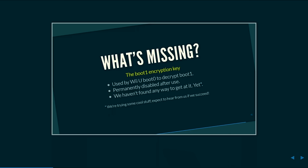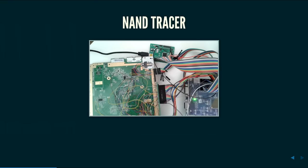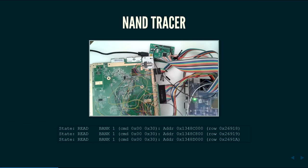Wir versuchten, den Boot-1-Key über einen Side-Channel-Attack zu bekommen, aber das sah nicht gut aus. Wir schlossen also einen NAND-Tracer an und snifften den Traffic zwischen dem NAND und den Boot-1-Reads, um zu sehen, was dieser Prozess aus dem Flash-Speicher liest. Wir sahen nette Adressen, verglichen sie mit dem Dateisystem auf dem Flash-Speicher und spielten ein bisschen mit ein paar Dateien rum. Wir fanden raus, dass Boot-1 eine System.xml-Datei parst.